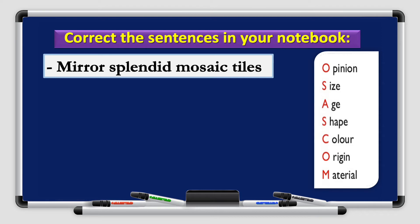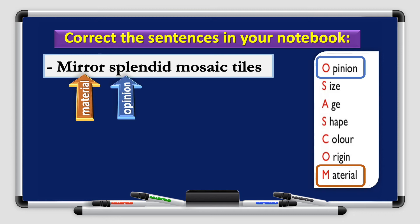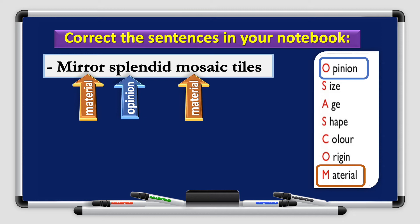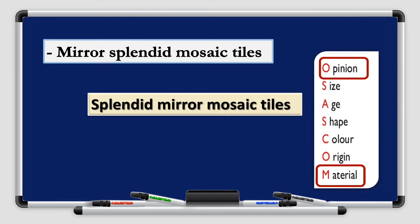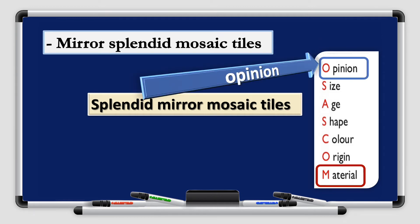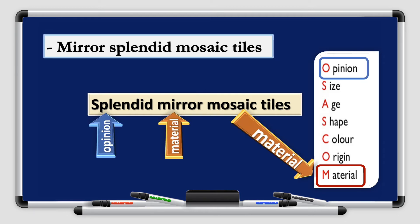Let's correct some of these sentences and place the adjectives in the correct order. Mirror, splendid, mosaic, tiles. Let's identify first the type of the adjective. Mirror is material. Does it come first? No. Splendid is an opinion. And mosaic again is a material. How can I rearrange my sentence to make it a correct one? Excellent. I start with the opinion. Splendid, mirror, mosaic, tiles. Very good. Opinion followed by material.